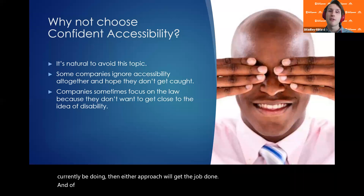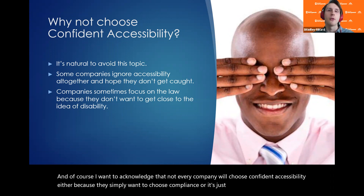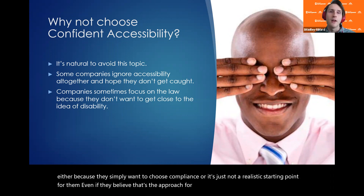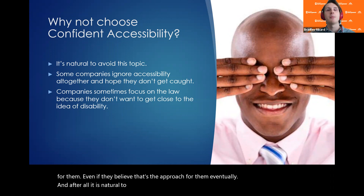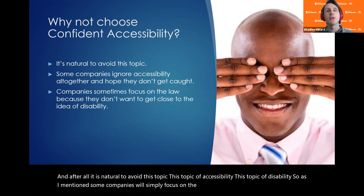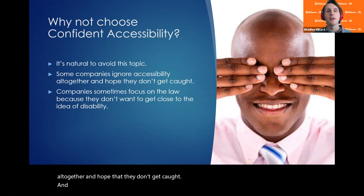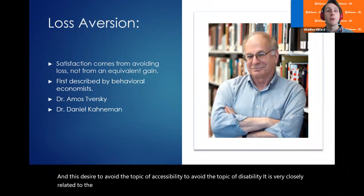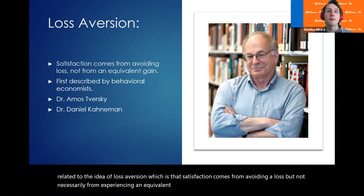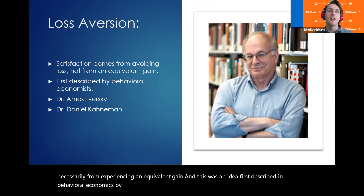Not every company will choose confident accessibility — either because they simply prefer compliance or it's not a realistic starting point. It is natural to avoid the topic of accessibility and disability. This desire to avoid the topic is closely related to the idea of loss aversion, which is that satisfaction comes from avoiding a loss but not necessarily from experiencing an equivalent gain. This idea was first described in behavioral economics by Dr. Amos Tversky and Dr. Daniel Kahneman, who won the Nobel Prize in economics in 2002 for his work on this concept.